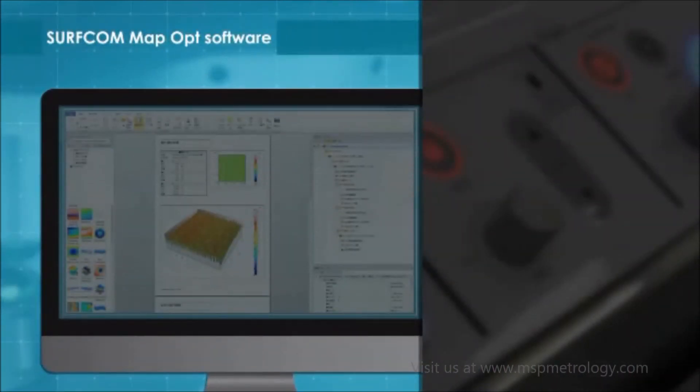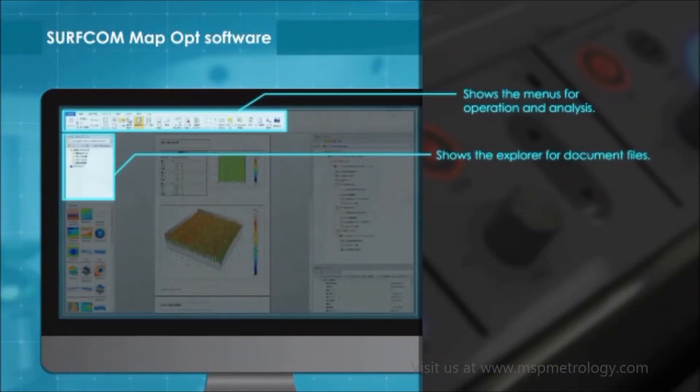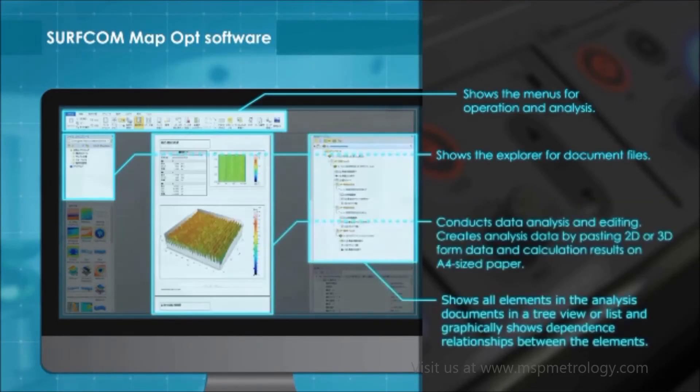Its analytical software, Surfcom Map-Op, allows you to analyze measured 3D surface texture data. Analyzed data can be saved as a document file so that it can be retrieved at any time for re-analysis. The screen structure is easy to see and is used for various 3D analyses.